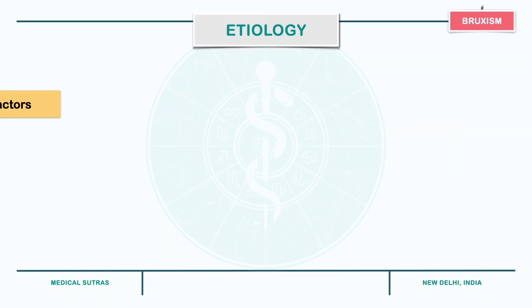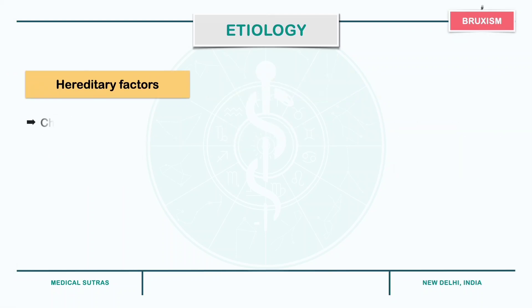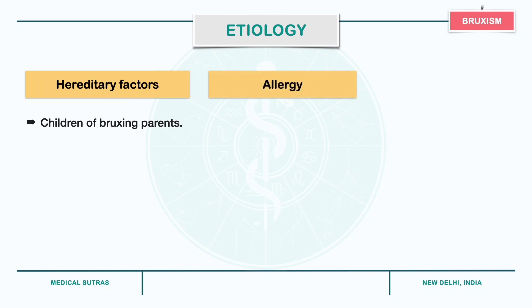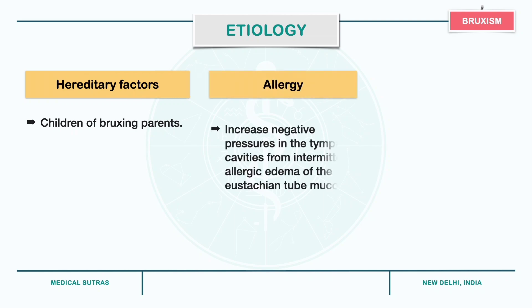Hereditary factors include parents with bruxism habits. In allergy, intermittent allergic edema of the Eustachian tube mucosa can increase negative pressure in the tympanic cavity leading to nocturnal bruxism.